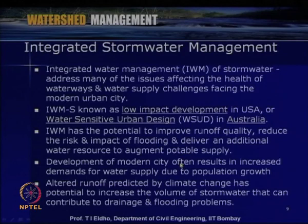Integrated Water Management (IWM) has the potential to improve runoff quality, reduce the risk and impact of flooding, and deliver an additional water resource to augment potable supply. The key goals are reducing flooding problems and augmenting potable water supply within the watershed. Climate change may alter runoff and increase the volume of stormwater contributing to drainage and flooding problems, making integrated stormwater management a good option to reduce flooding and water quality issues while improving local water availability.